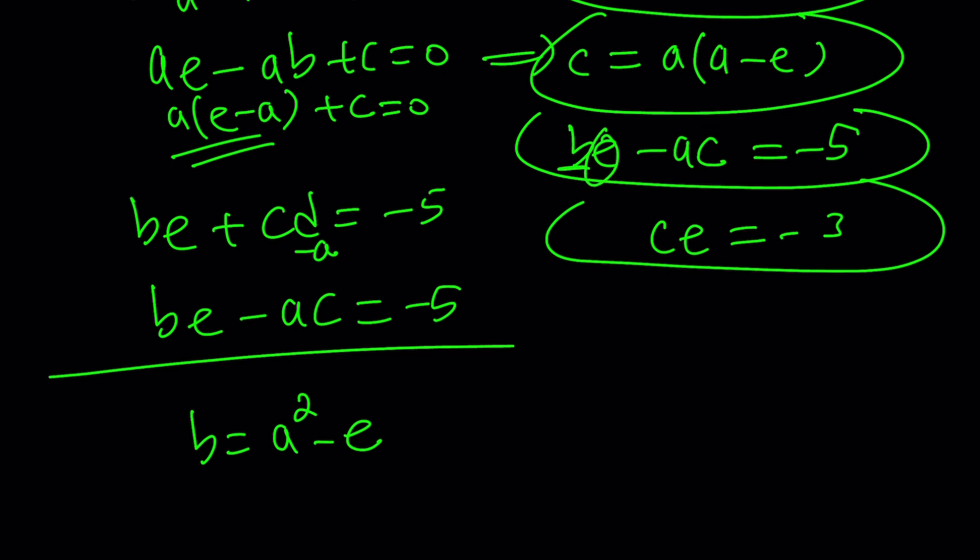And then if you replace b with that everywhere, that might give us something a little better. Maybe here, replace b with e times (a squared minus e). And then for c, I can do this negative 3 over e, so that things are more in terms of e and a.